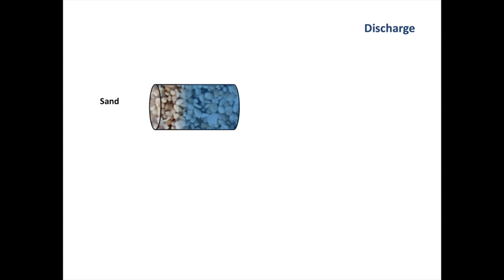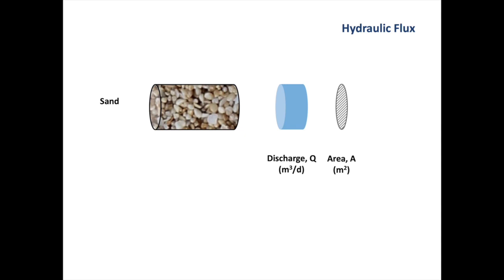In our permeability experiment, we've been measuring the discharge at various hydraulic gradients. The discharge is a volumetric flow rate, which means it has units of volume over time — in this case, cubic meters per day. The discharge has to pass through the cross-sectional area of the cylinder. If we divide the discharge by the area, we will obtain a volumetric flow rate per unit area, and this is known as the hydraulic flux. Small q equals discharge divided by area.